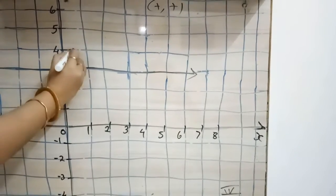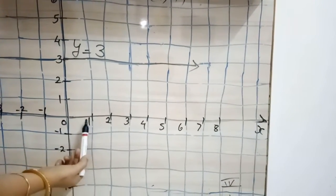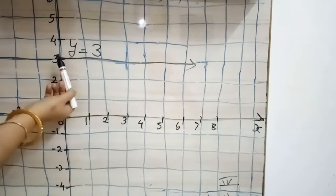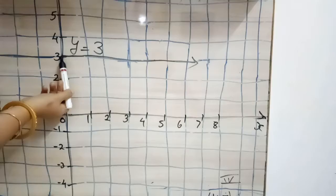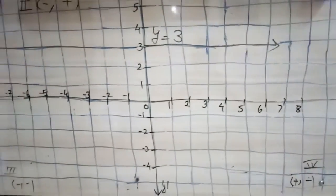Here you can write y equals 3, because the value of x is changing—x1, x2, x3, x4—it is changing, but the value of y is fixed. Y is 3 on the whole line.